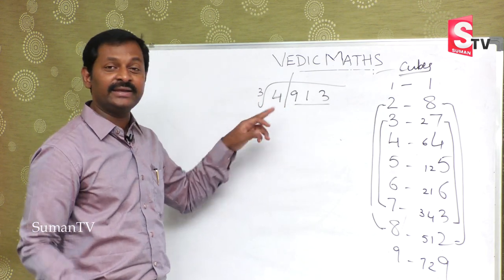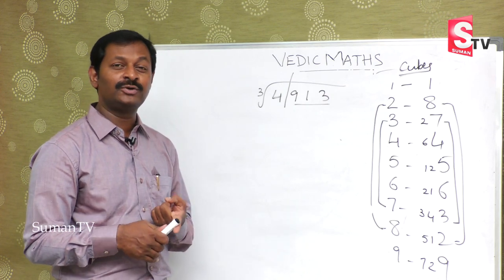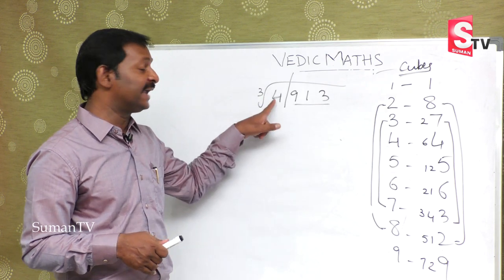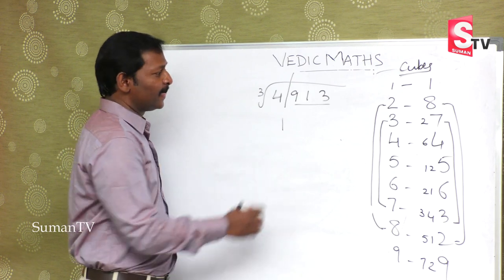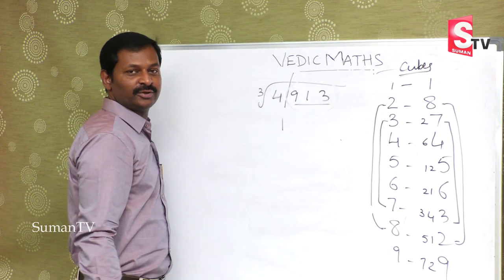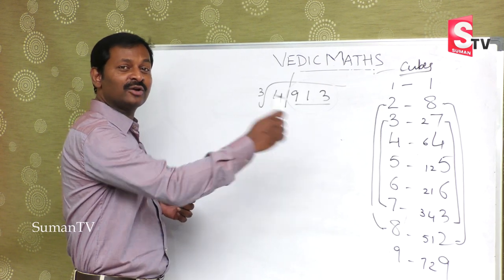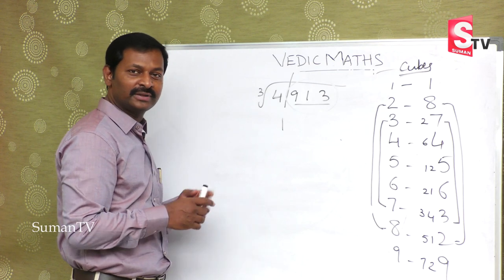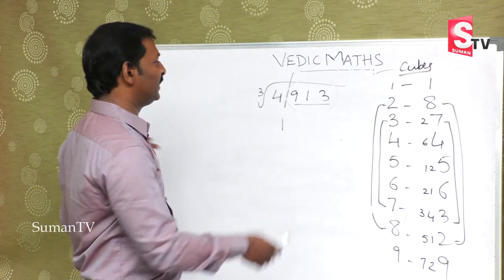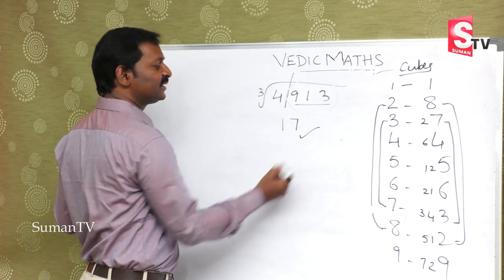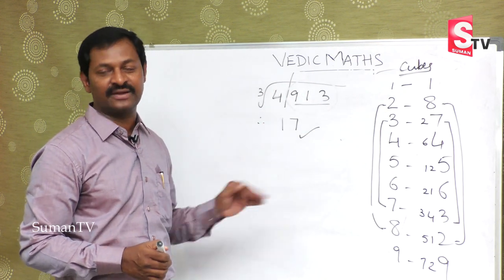First part is 4. Which cube is closest to 4? That is 1 cube = 1. So the first digit of the answer is 1. Now the second part is 913 — what is the last digit? It is 3. What combination gives 3? 7 combination is 3. So the second digit is 7. The answer is 17. Cube root of 4913 is nothing but 17.